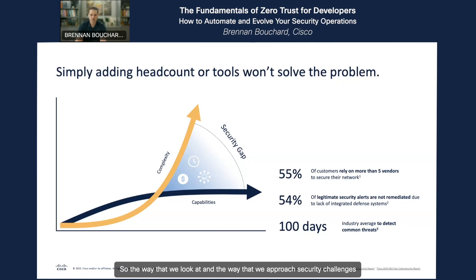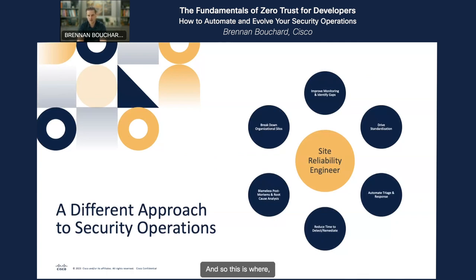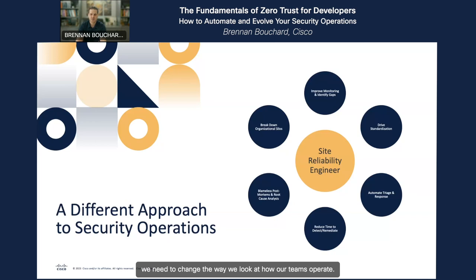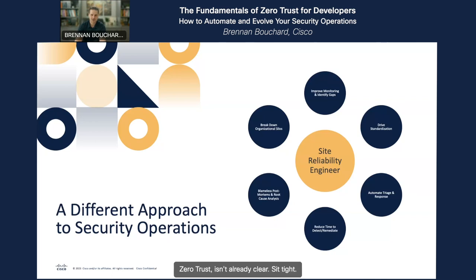The way we approach security challenges needs to shift significantly. We should really be looking at adopting site reliability engineering. In order for the SOC to be as effective as possible, they need the skill set of DevOps principles and SRE. We need to change the way we look at how our teams operate — providing a sense to see the forest from among the trees, break down barriers, drive collaboration, and incremental efficiencies all along the way. If the need for DevOps principles applied by a SOC to achieve zero trust isn't already clear, sit tight — we're going to dive into it in just a minute.